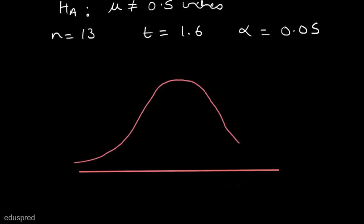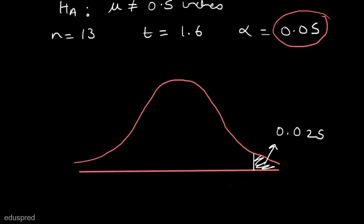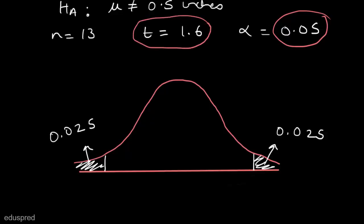This is how the t-distribution looks — symmetric and bell-shaped. We are given that alpha is equal to 0.05 and this is a two-tail test, so this region is 0.025 and this region is 0.025. We have divided alpha into two equal parts. Now we have to find the critical value of t, which we will compare with this value to see whether to reject the null hypothesis or not reject the null hypothesis.